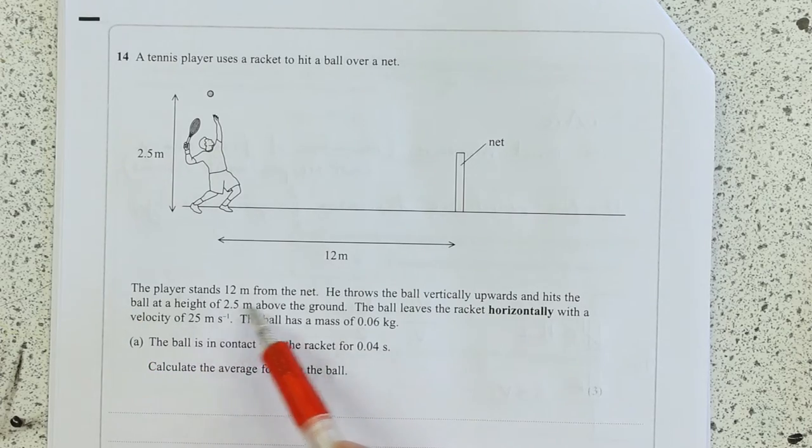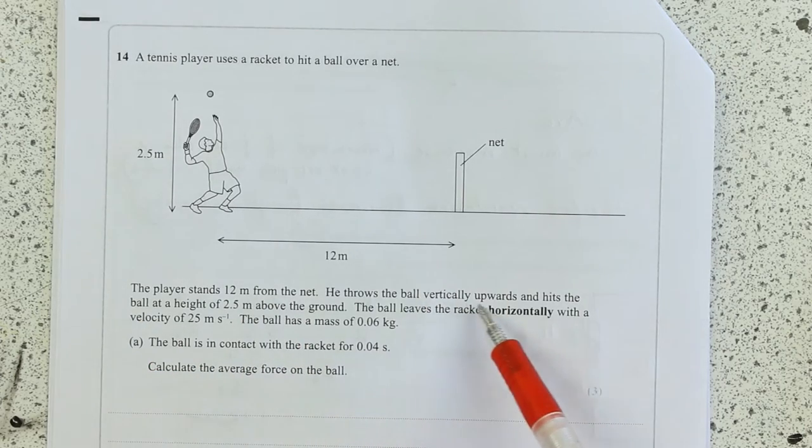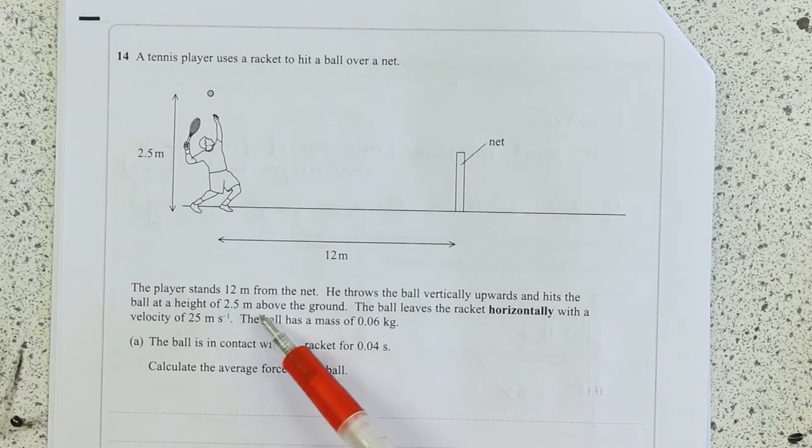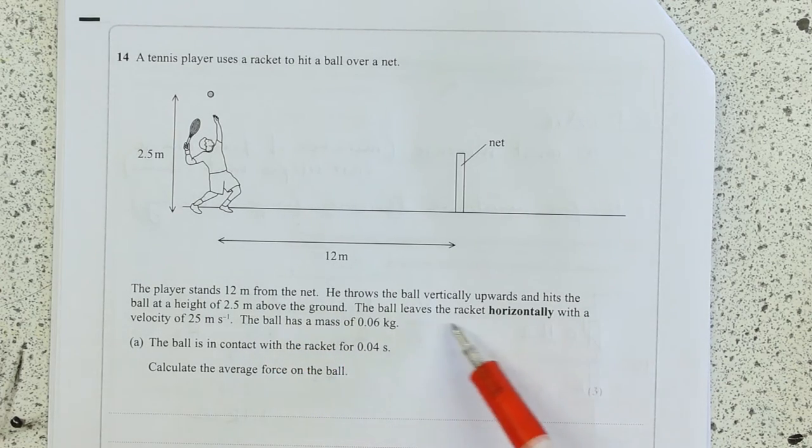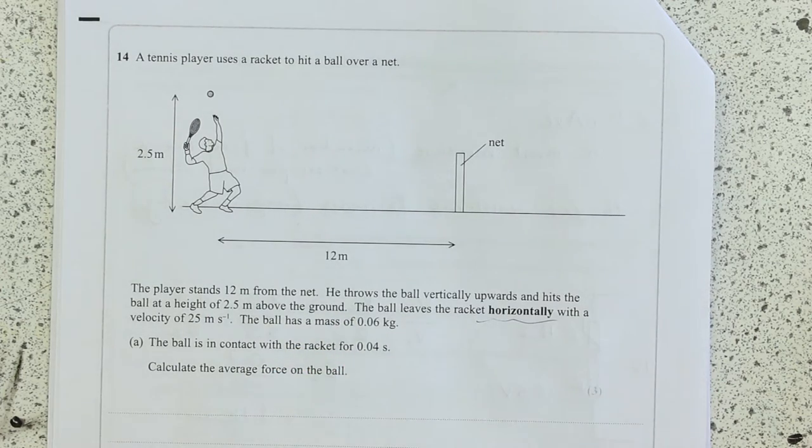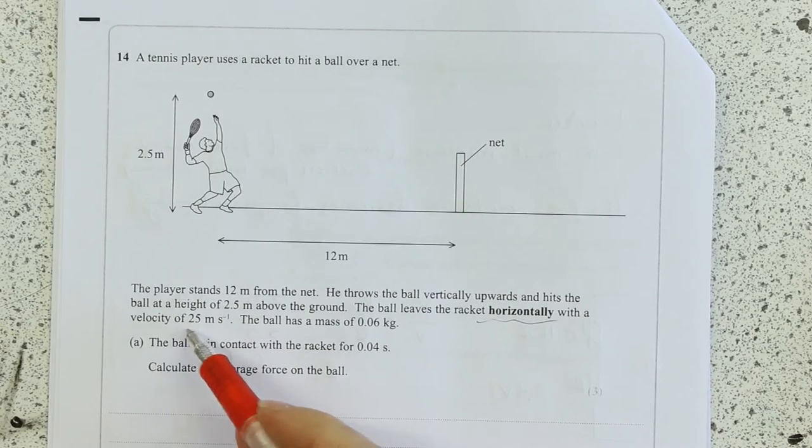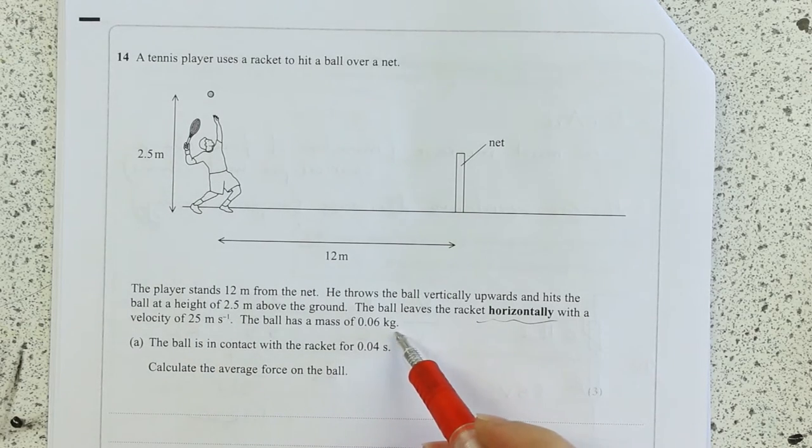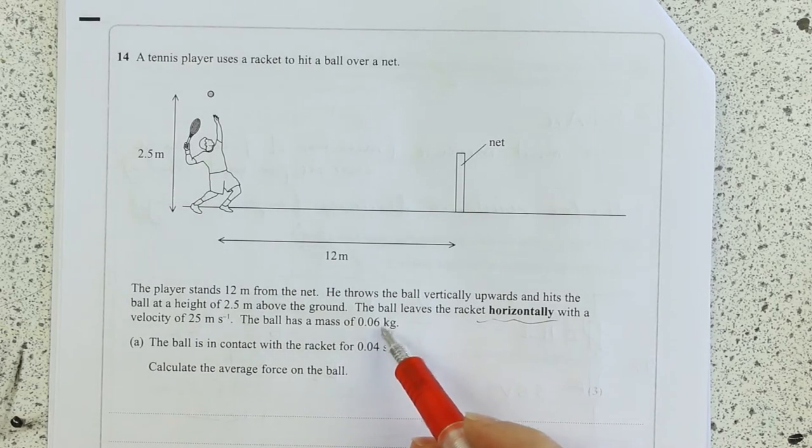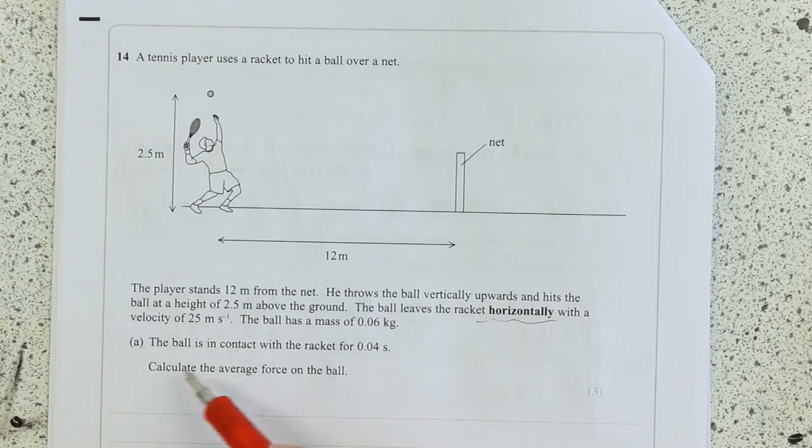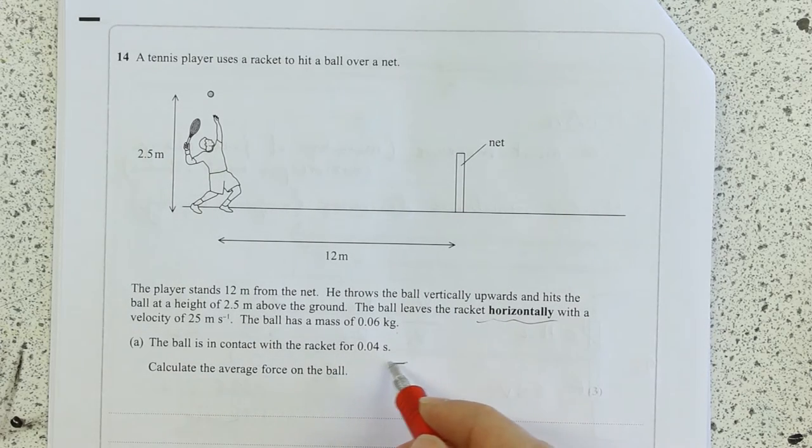The player stands 12 meters from the net. He throws the ball vertically upwards, hits the ball at 2.5 above the ground. Yeah, we'll need this later. Racket leaves the ball horizontally - they're going to ask us about projectiles in a minute. Velocity of 25 meters per second. Ball has a mass of this. Can always get a nice force from that probably. Ball is in contact with the racket for 0.04 seconds.